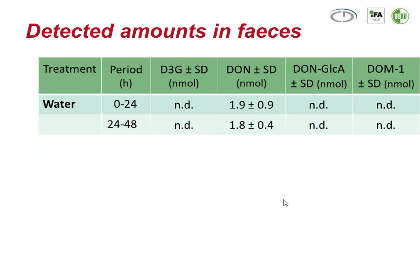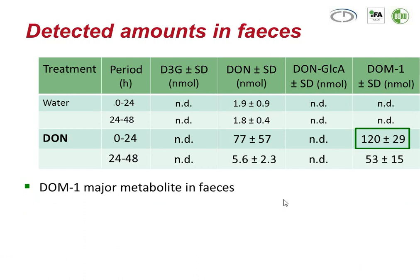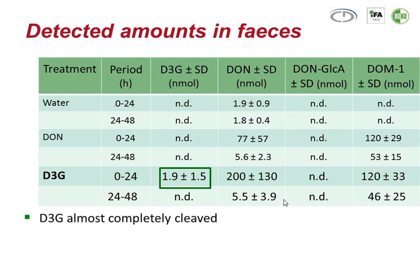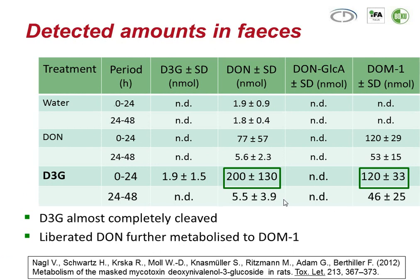When we look at feces, in the water group we found some amounts of deoxynivalenol from the diet. In the DON group, the de-epoxy metabolite was the major metabolite in feces. And in the DON-3-glucoside group, we barely find any remaining DON-3-glucoside, meaning basically all of this compound is cleaved. However, we find quite large amounts of deoxynivalenol and also of the de-epoxy DON in feces. The study was published two years ago.